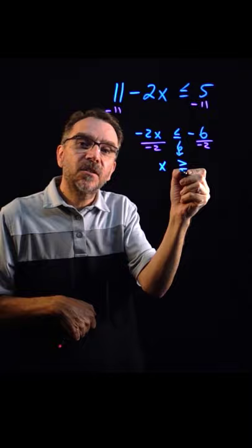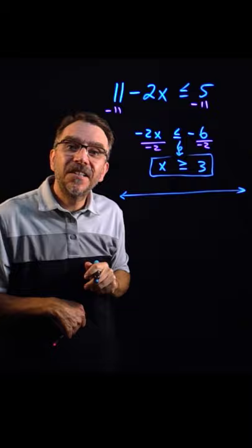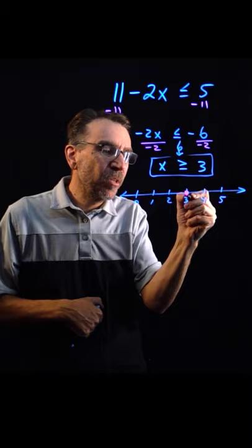All right, so that's kind of my answer. Now let's graph this on a number line. In this particular case, this is an inclusive inequality, so I'm going to use a closed dot and shade all the numbers greater than 3.